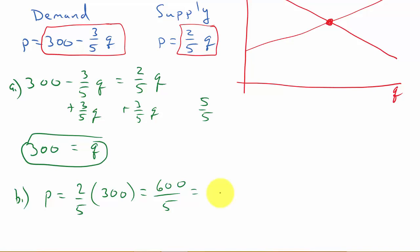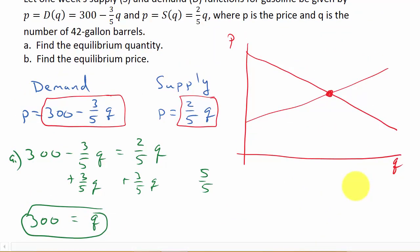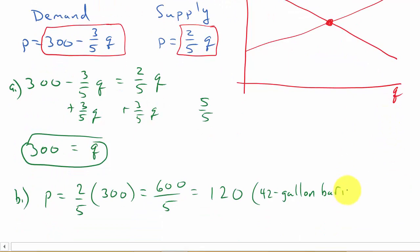600 over 5, which is 120. That's your equilibrium price.